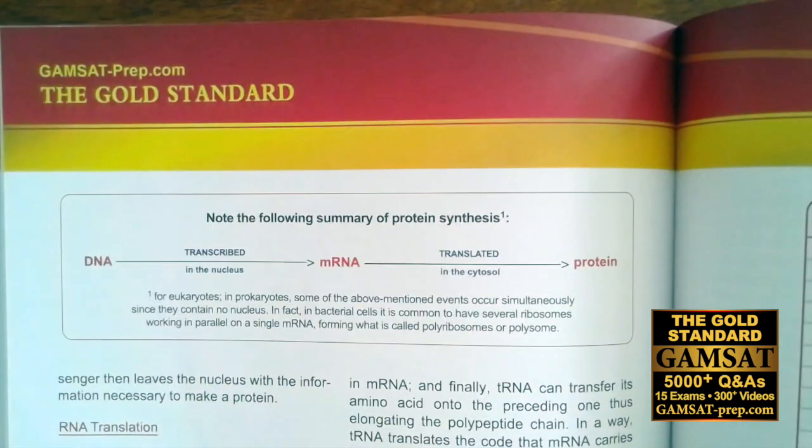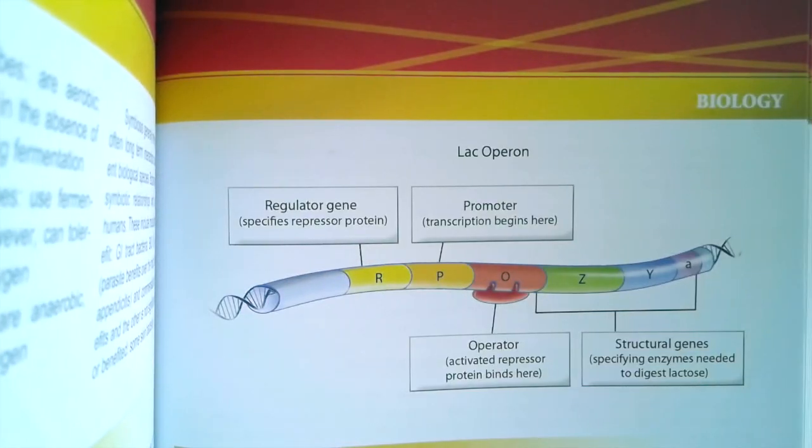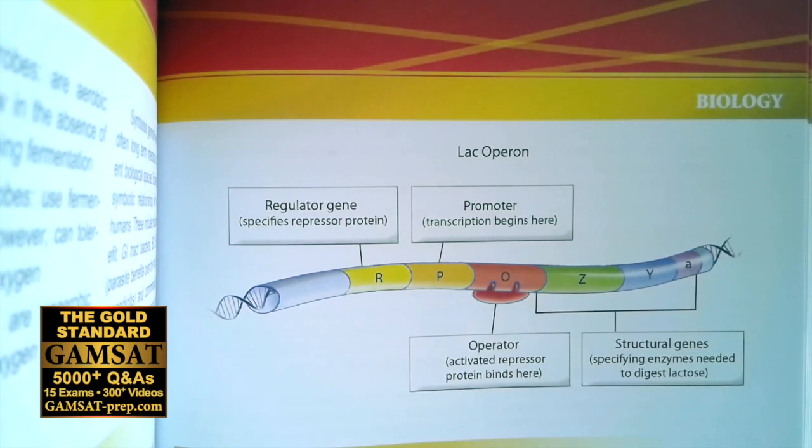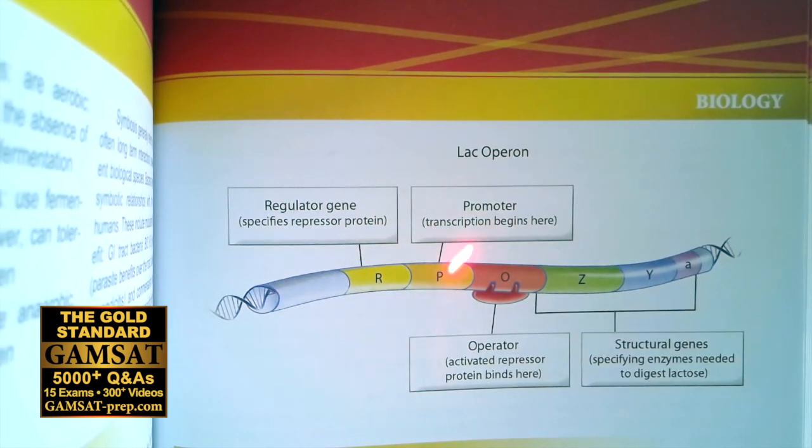Now let's look at the lac operon. These are DNA sequences in a bacterium that tell us a lot about the control of DNA expression.